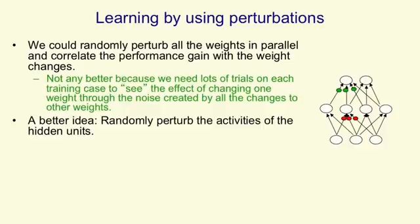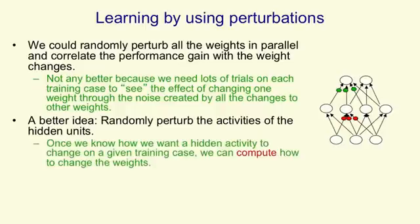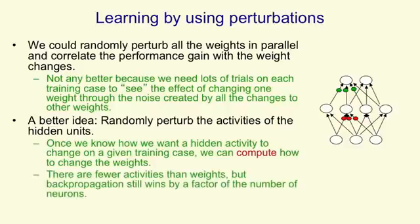Something that does help is to randomly perturb the activities of the hidden units instead of perturbing the weights. Once you've decided that perturbing the activity of a hidden unit on a particular training case is going to make things better, you can then compute how to change the weights. Since there are many fewer activities than weights, there are fewer things to randomly explore, making the algorithm more efficient. But it's still much less efficient than backpropagation — backpropagation still wins by a factor of the number of neurons.